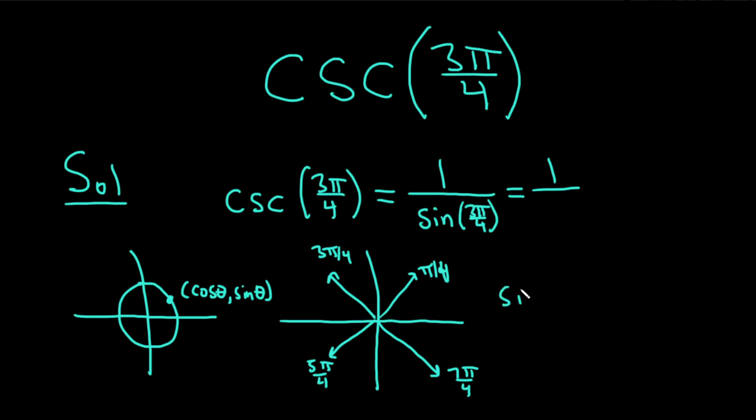Well, the sine of π over 4 is equal to the square root of 2 over 2. And so is the cosine of π over 4. The cosine of π over 4 is also equal to the square root of 2 over 2.